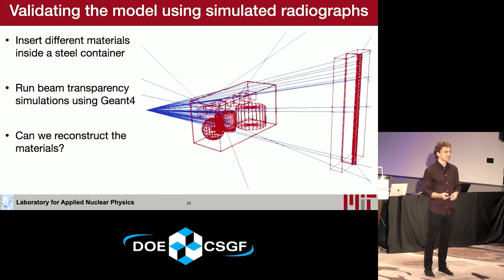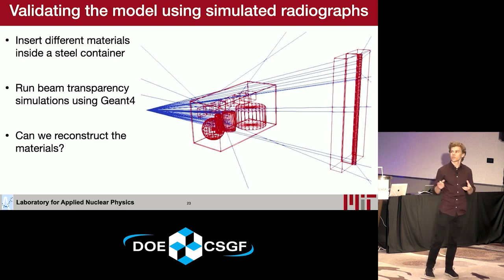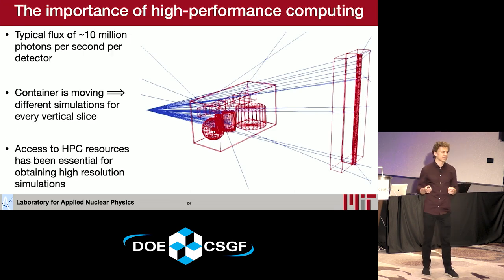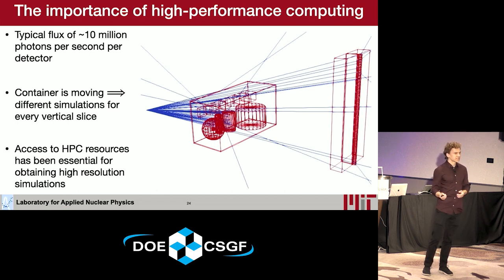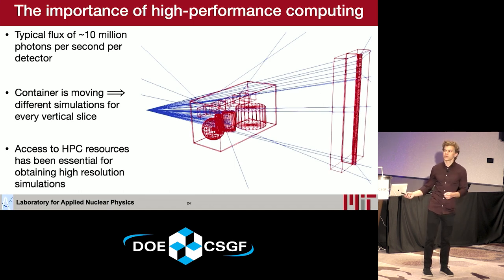To validate this, a simulation study was run using a steel cargo container with different materials placed inside. Monte Carlo simulations were run in GEANT4. An important note on high performance computing: these are very high flux systems, around 10 million photons per second per detector. Furthermore, since the container is moving, a different set of simulations must be run for every vertical slice, so access to HPC resources has been very valuable for obtaining realistic simulation outputs.